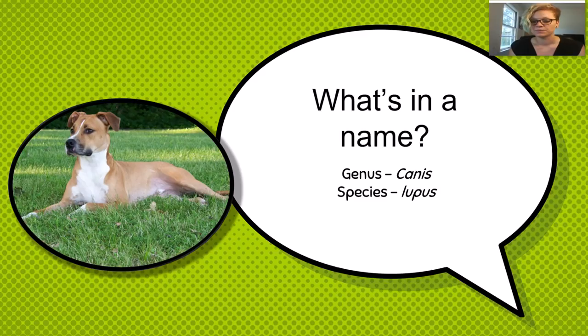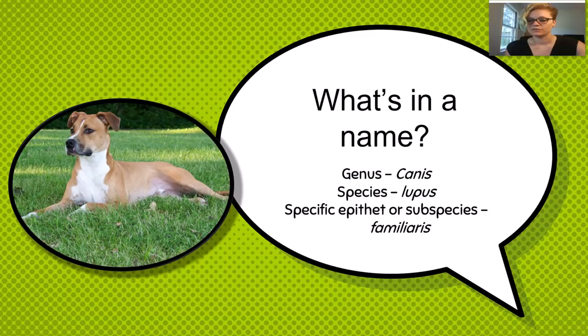If an animal is a subspecies, there will be a third word. This is a specific epithet which lets you know the animal has a slight distinction from the rest of its species. Dogs are widely considered to be a subspecies of wolves, although as with everything in taxonomy, there is some debate around this classification. So when we put the whole name together, we have Canis lupus familiaris.